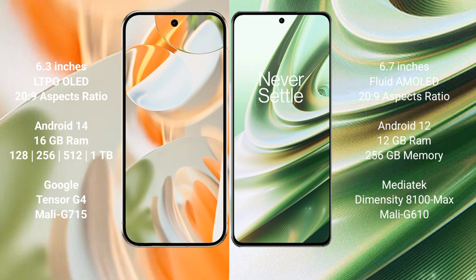The Google Pixel 9 Pro runs on the Android 14 operating system, while the OnePlus 10R runs on the Android 12 operating system.